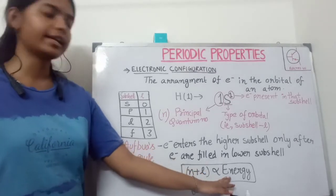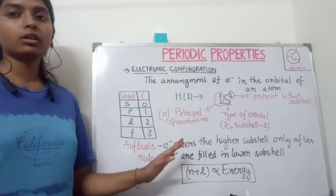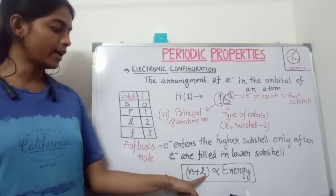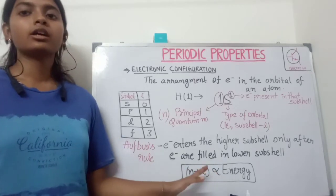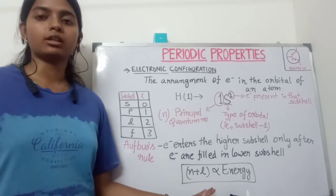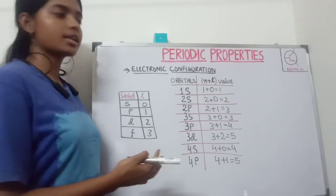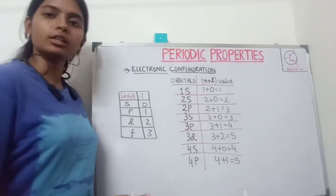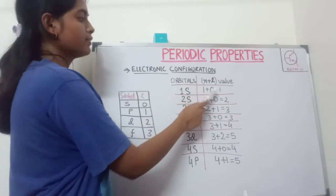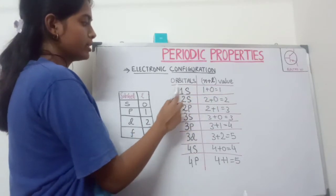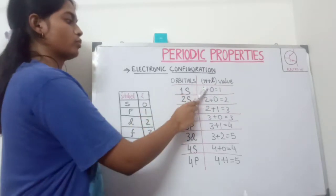Energy is decided according to the n plus l rule. The n plus l value is always directly proportional to the energy of the orbital. This table represents the orbitals and the n plus l value for each orbital. For 1s, the n plus l value is 1, because n is 1 and the l value for s is 0, so 1 plus 0 equals 1. Like that, the n plus l value is determined for each and every orbital.